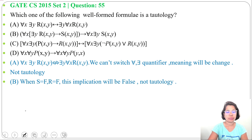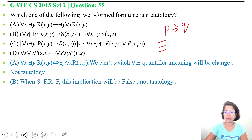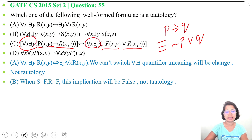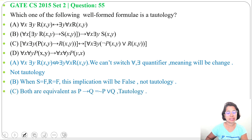Option C: 'for all x, there exists y, p(x,y) implies r(x,y)' with double implication 'for all x, there exists y, negation of p(x,y) or r(x,y)'. We know p implies q is equivalent to negation p or q. So p(x,y) implies r(x,y) can be written as negation of p(x,y) or r(x,y) — both sides are the same. The quantifiers are also the same: for all x, there exists y. So both are equivalent, making it a tautology. In case of double implication, if both have the same truth value, it's true. So option C is a tautology.